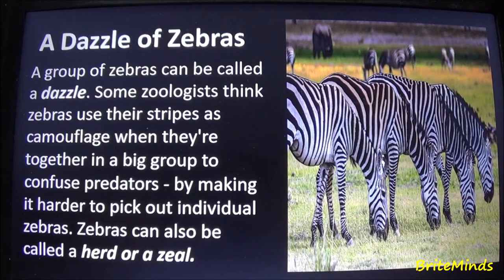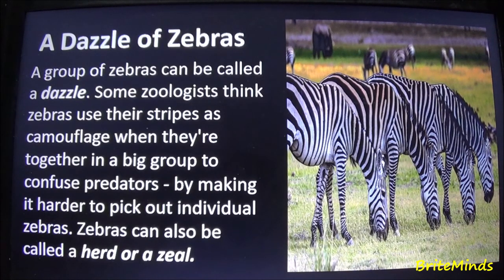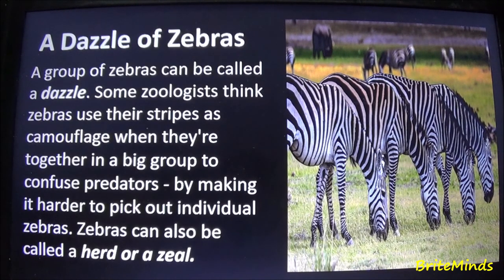A dazzle of zebras: a group of zebras can be called a dazzle. Some scientists think zebras use their stripes as camouflage when together in a big group, to confuse predators by making it harder to pick out individual zebras. Zebras can also be called a herd or a zeal.